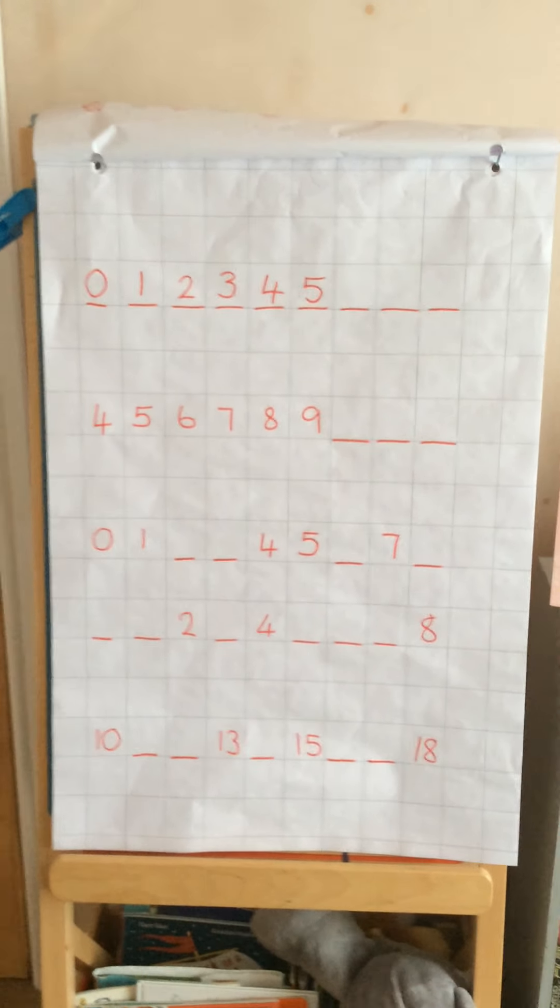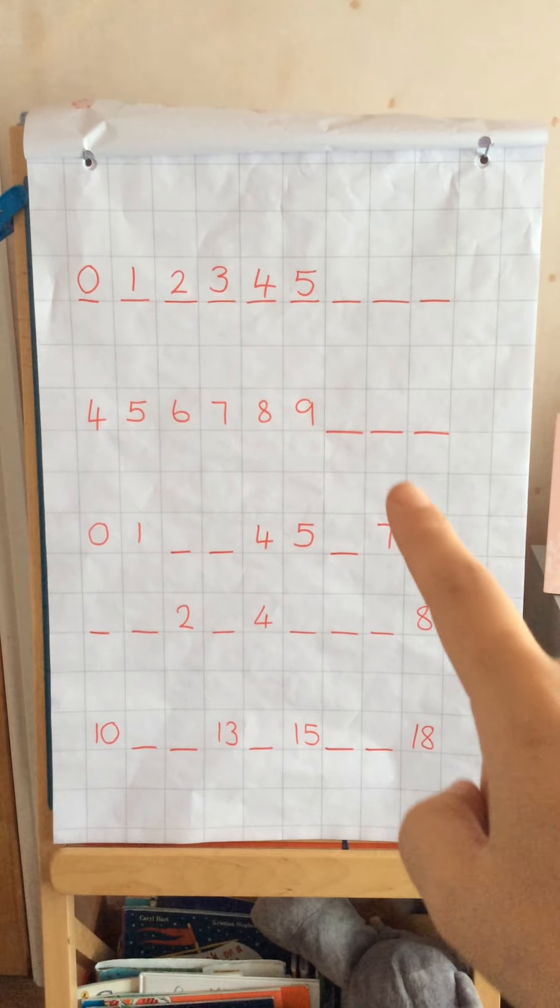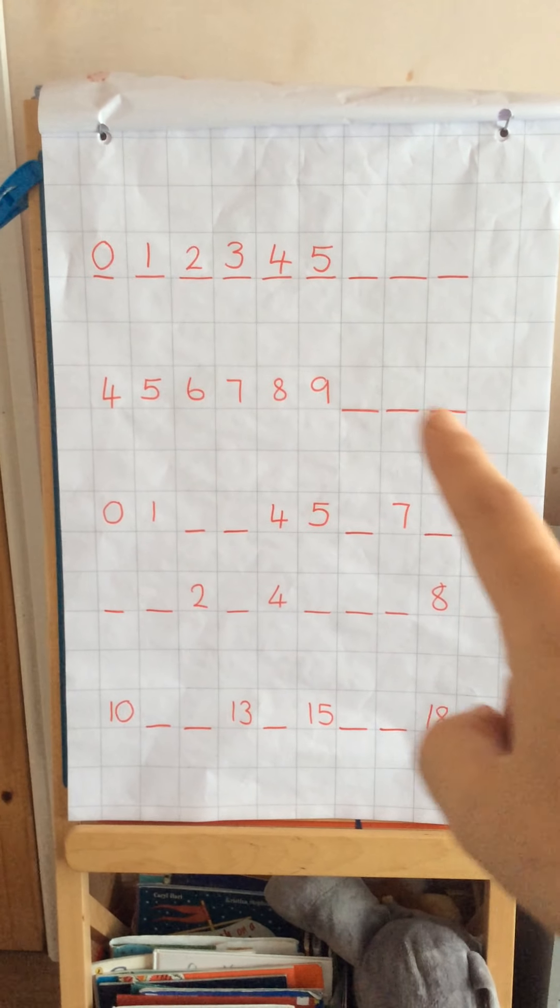So let's have a look. We've got the first one: zero, one, two, three, four, five - what's going to come next? You've got three numbers to find out. You need to write those numbers out and add the missing numbers in. What's the pattern? What's going to come next? What are they going up in? Next one starts at four: four, five, six, seven, eight, nine - what's going to come next? What are the next three numbers? What are they going up in?